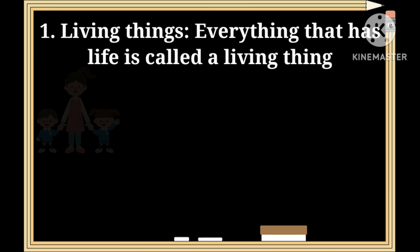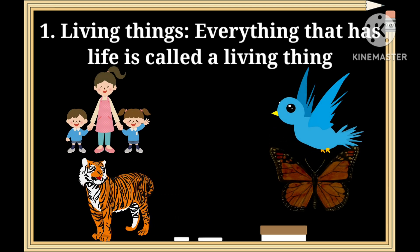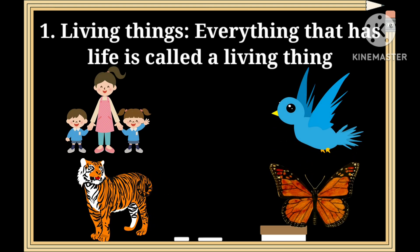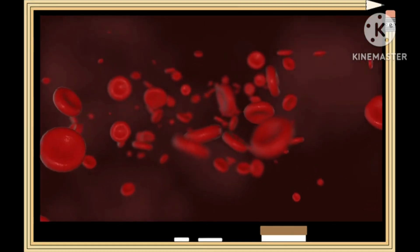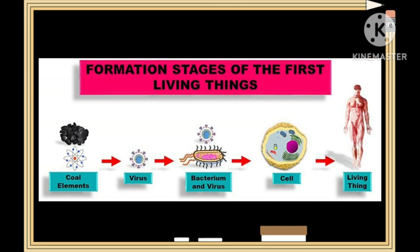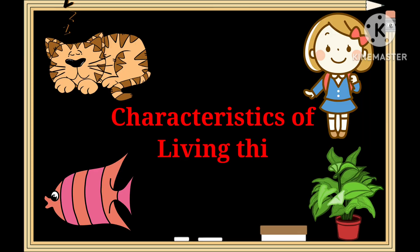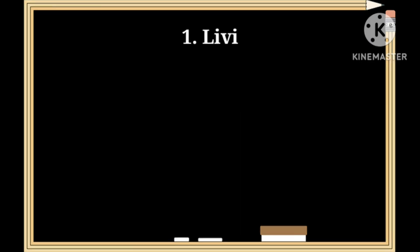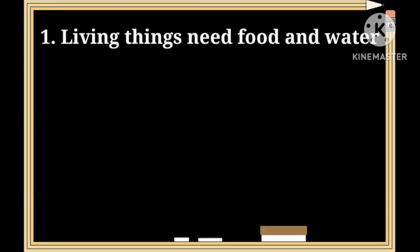Examples of living things include human beings, birds, animals, insects, etc. Living creatures are made up of small units called cells. Cells are the fundamental and structural unit of any living thing. Characteristics of living things — number one: living things need food and water.